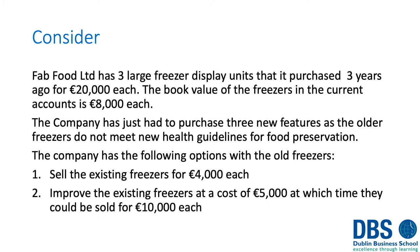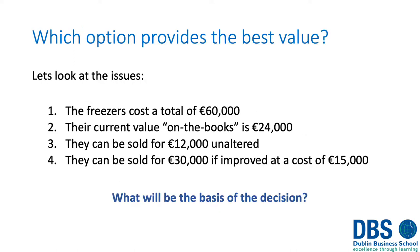A quick example: Fab Foods has three freezer display units purchased three years ago for €20,000 each; book value is currently €8,000 each. The company must buy new freezers because the current ones don't meet health and safety guidelines. The options are: (1) sell the existing freezers for €4,000 each, or (2) improve them at a cost of €5,000 each, after which they can be sold for €10,000 each. The original cost was €60,000 in total, current book value is €24,000, and they can be sold for €12,000 unaltered or €30,000 after spending €15,000 on improvements.